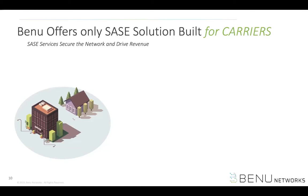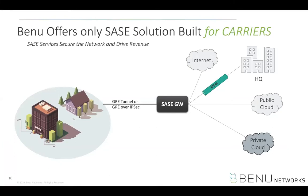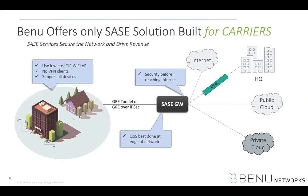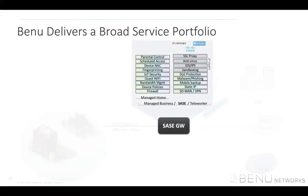Our approach is drastically different — we've actually built the only solution designed specifically for carriers. Carriers have a lot of control over the access network since they provide broadband connectivity, so they can integrate SASE directly into this network. With our solution, carriers can use low-cost Wi-Fi APs, don't require VPN clients, and can support all their devices. Security is done before reaching the internet, QoS is done at the edge closest to the user, and traffic is optimized via SD-WAN application routing. The solution has a broad suite of features ranging from parental controls to advanced security like firewall, DDoS protection, and malware and phishing protection, plus third-party integrations for SSL proxy, sandboxing, IDS, and antivirus.